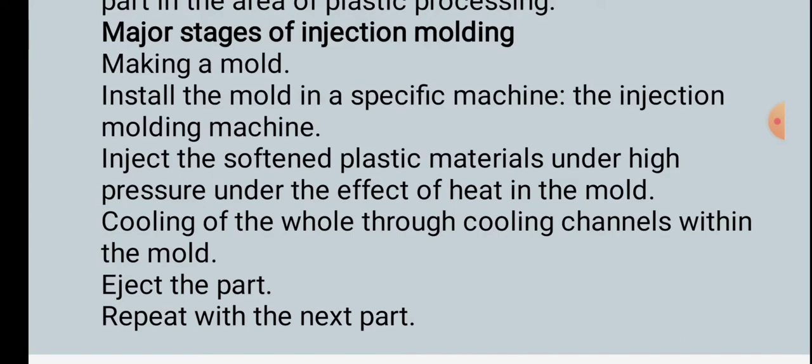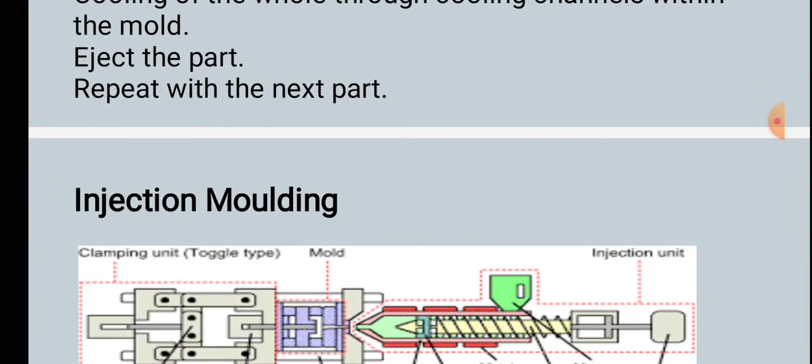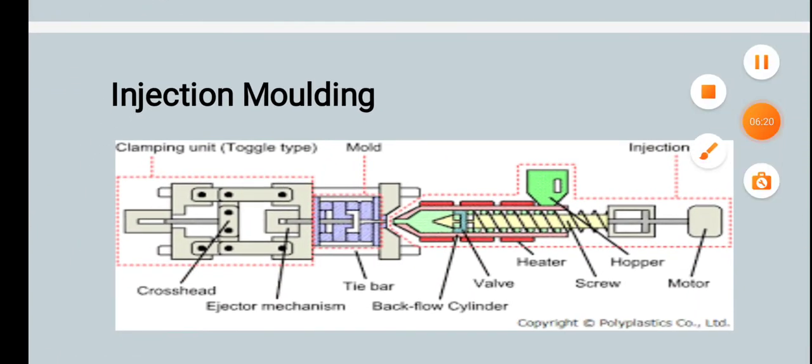Major stages of injection molding: making a mold; installing the mold in the injection molding machine; injecting softened plastic materials under high pressure and heat into the mold; cooling through cooling channels within the mold; ejecting the part; and repeating with the next part.